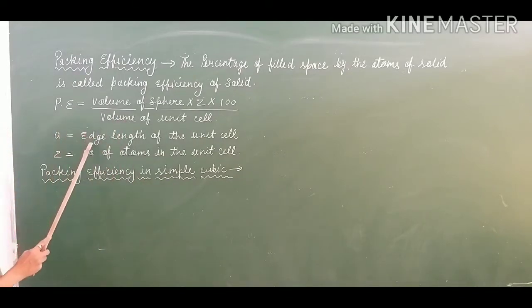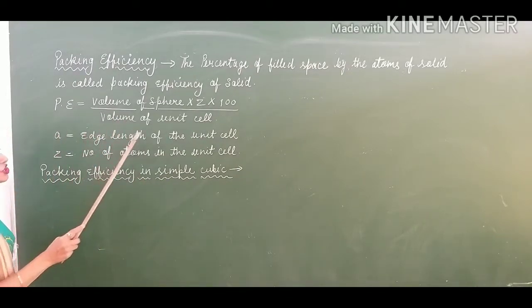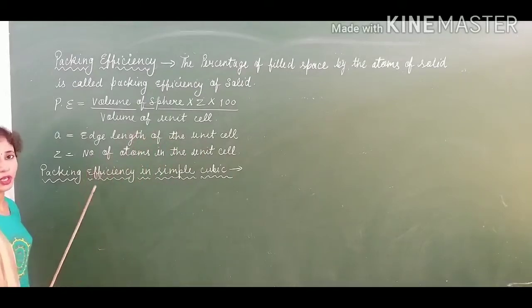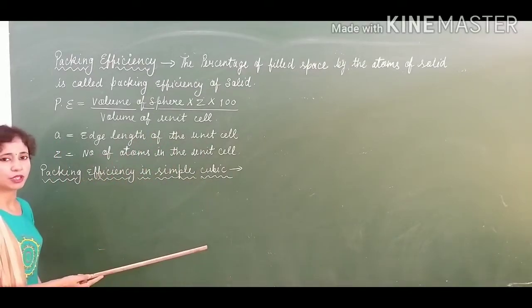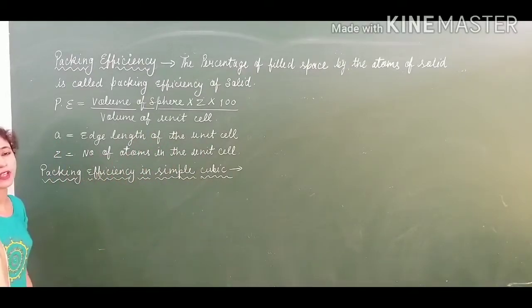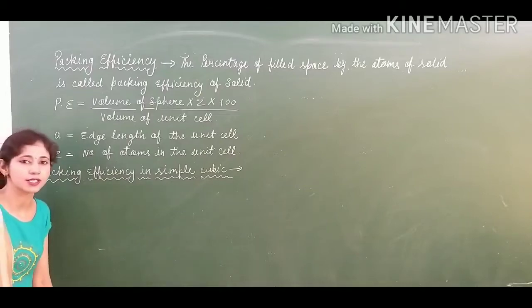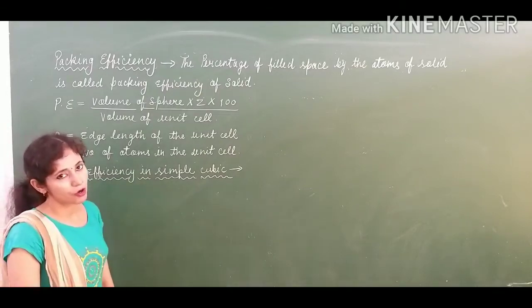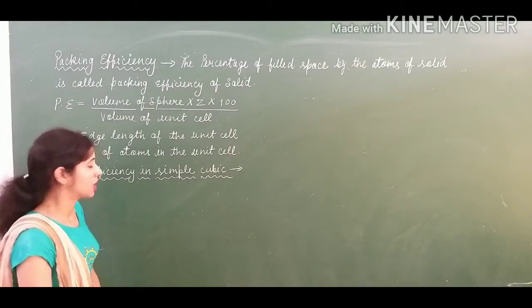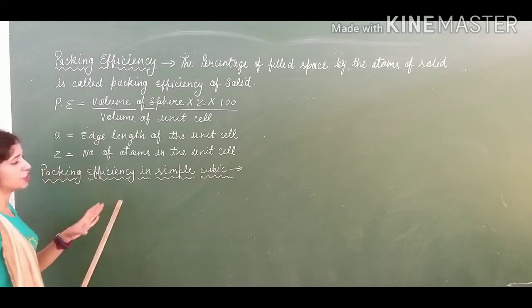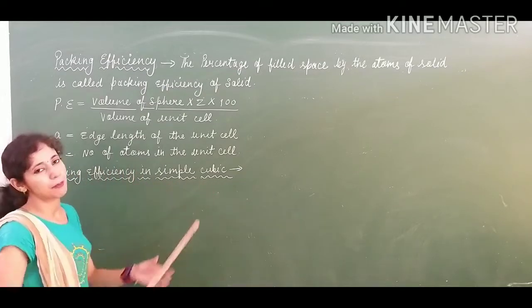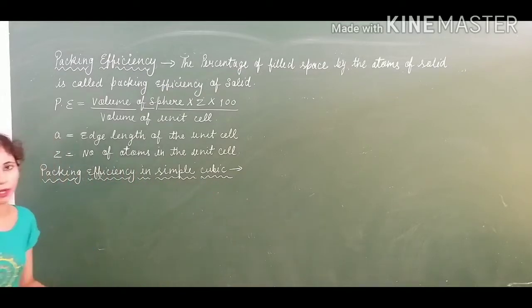Here, A represents the edge length of the unit cell. Z is the number of atoms per unit cell, also called the rank of the crystal. So let's start to calculate the packing efficiency in simple cubic.